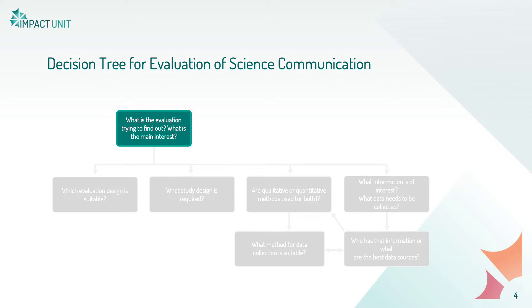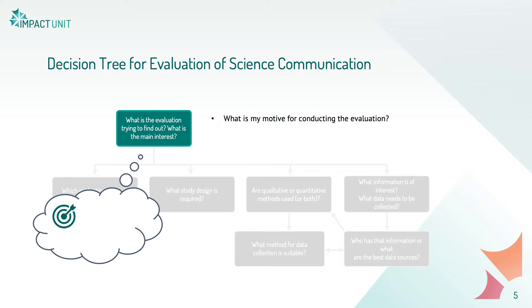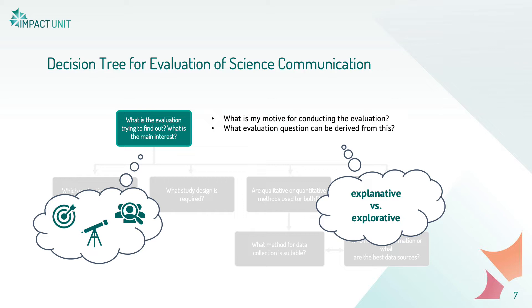To answer this, we start with identifying the motives of the evaluation. Most of the time it's either about measuring if you met your goals and can call a project successful, identifying how to improve certain processes in the future, or simply learning about your activities — how they work, who you reach, etc. Based on this you'll formulate questions that your evaluation is supposed to answer. There are two different types of questions you can ask: an explainative or an explorative question.